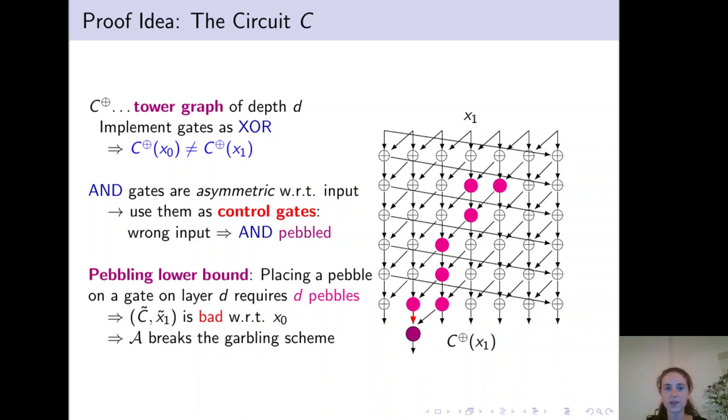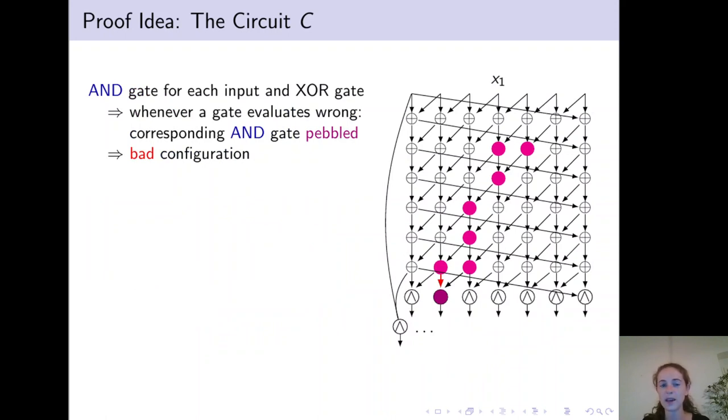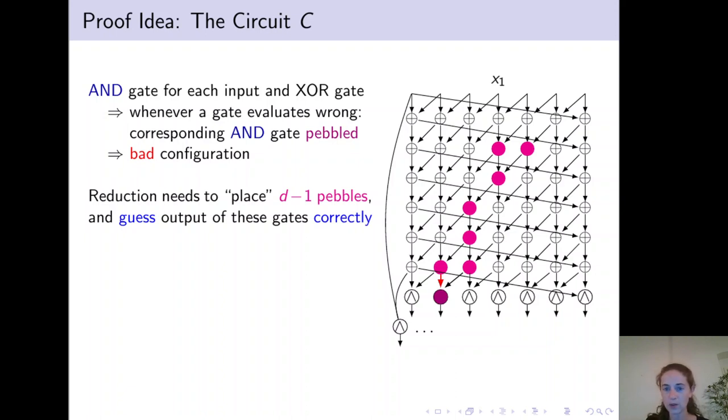To complete the picture of our circuit, it contains AND gates for each input and each XOR gate. And whenever a gate evaluates wrong or some input key is wrong, then the corresponding AND gate is pebbled and the adversary automatically extracts a bad configuration independently of the challenge. This implies that the reduction needs to place D minus 1 pebbles on the XOR circuit and for each of these pebbles it needs to guess the output during evaluation of C on input X0.